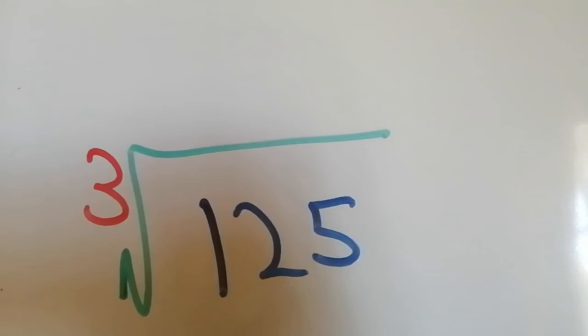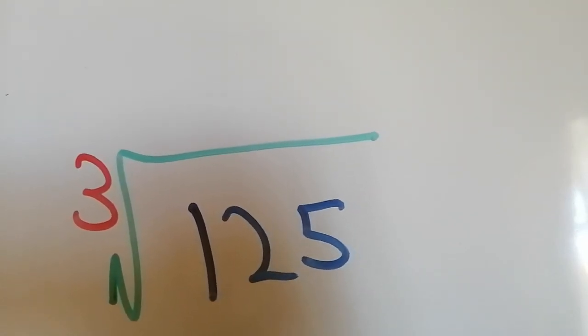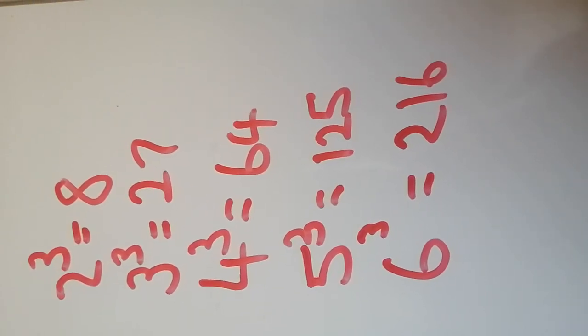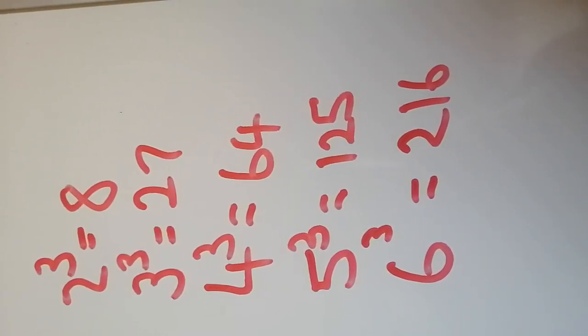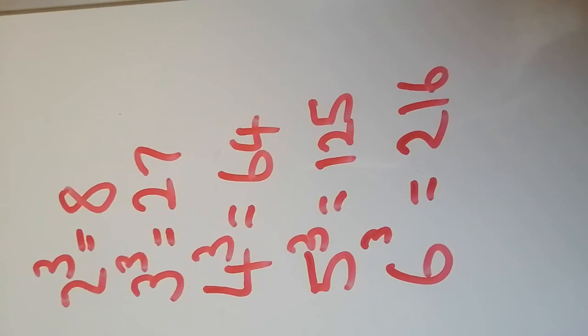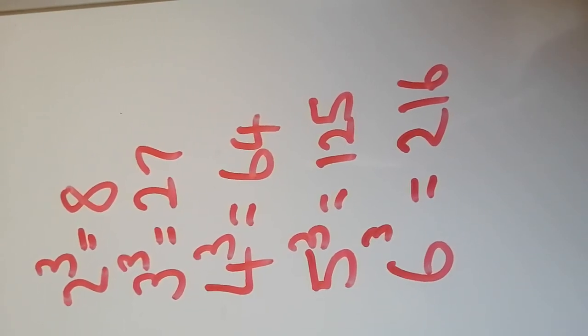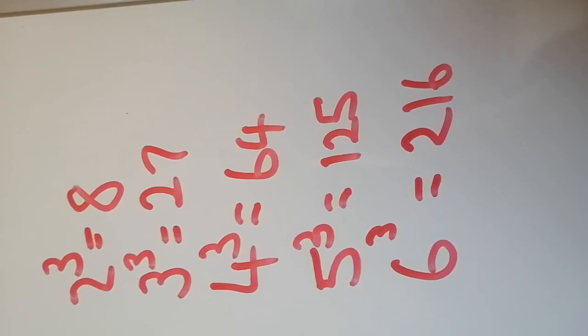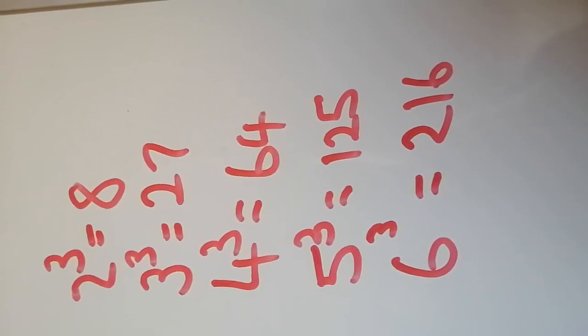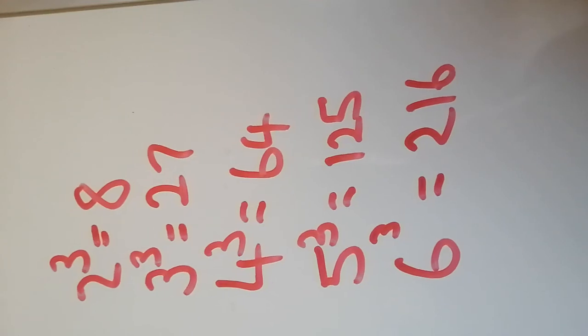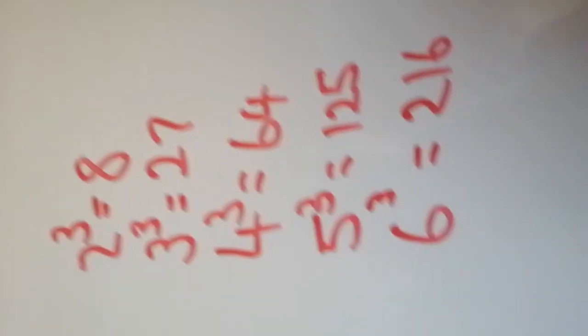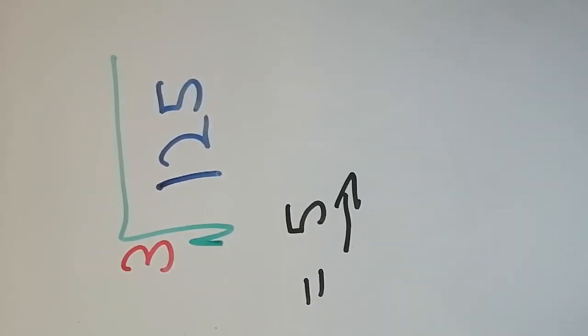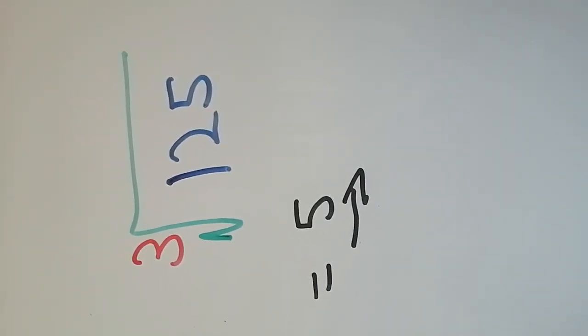So what is the cube root of 125? Let us look at this list. We are looking for the cube root of 125, so we are looking for a number that multiplied by itself three times gives us 125. According to this list, 5 to the power 3, or 5 cubed, gives us 125, which means that the cube root of 125 is therefore 5.